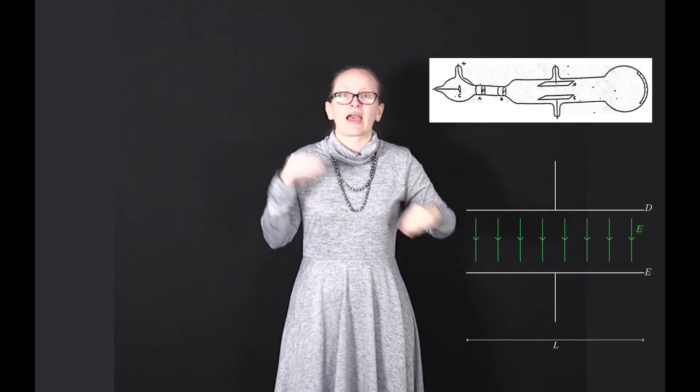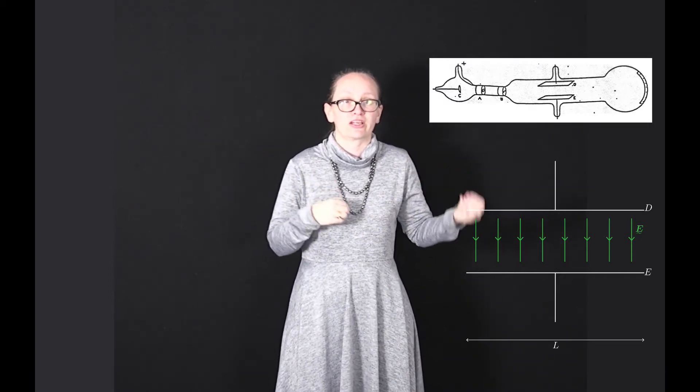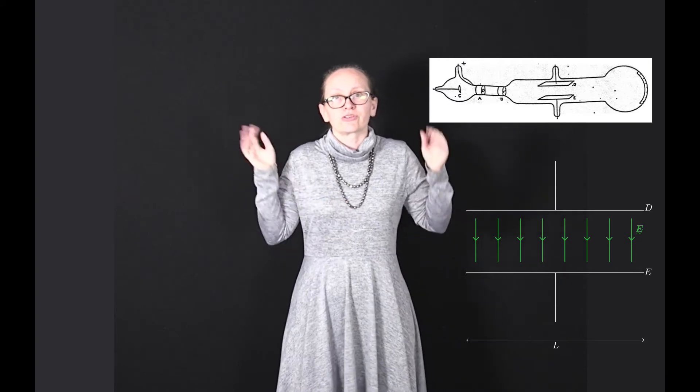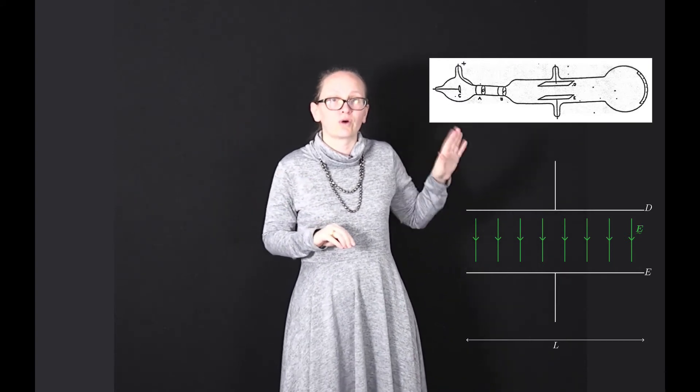Thompson could measure the deflection, and from that he could come up with an expression for the charge-to-mass ratio of the electron. To do this, you need to use the kinematic equations. Let's work through what he did.